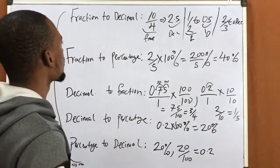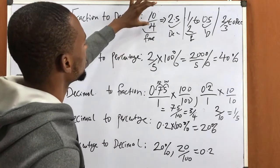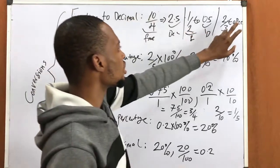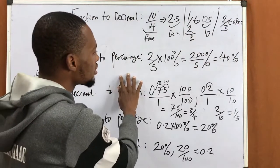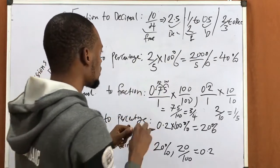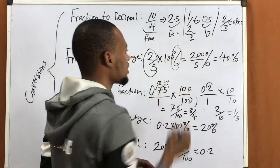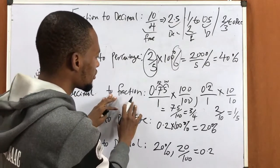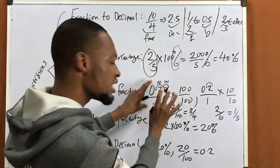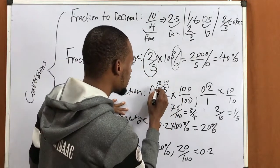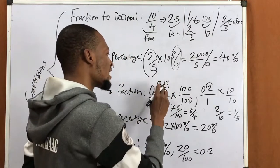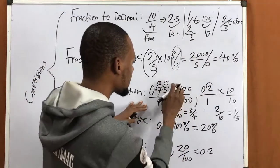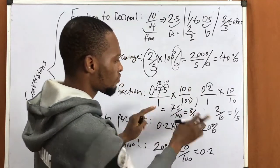To summarize: to convert from fraction to decimal, divide the numerator by the denominator and your answer will be in decimal. To convert from fraction to percentage, multiply the number by 100 and add the percentage sign. To convert from decimal to fraction, first divide by 1 — which doesn't change anything — then count from the decimal point: one digit is 10, twice is 100, three times is 1,000, four times is 10,000 and so on. Multiply top and bottom accordingly, then simplify.